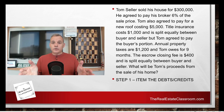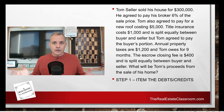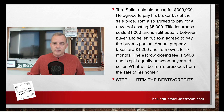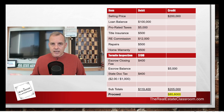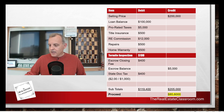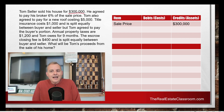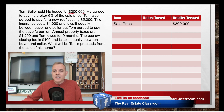A lot of times students see that long math word problem and they freak out — it's understandable. But what I teach my students to do is take each sentence and itemize the costs or the credits. The best way to do these problems is to go sentence by sentence. You won't get a spreadsheet in the exam room, but you'll have scratch paper and a pen. Just make three columns: an item column, a debit, and a credit. So let's go sentence by sentence. The first sentence says Tom Seller sold his house for $300,000. That tells us the item is sale price and it is a credit to the seller, so we put $300,000 in the credit column.